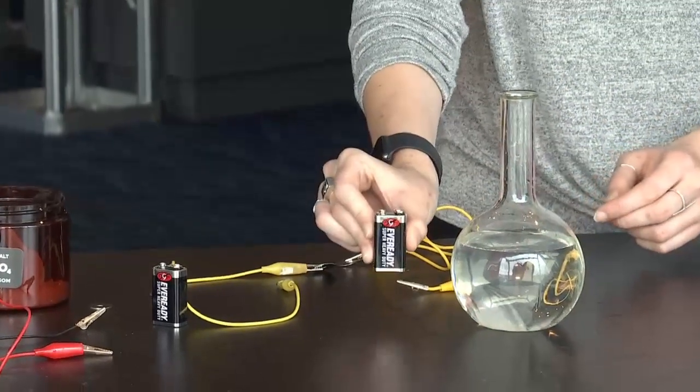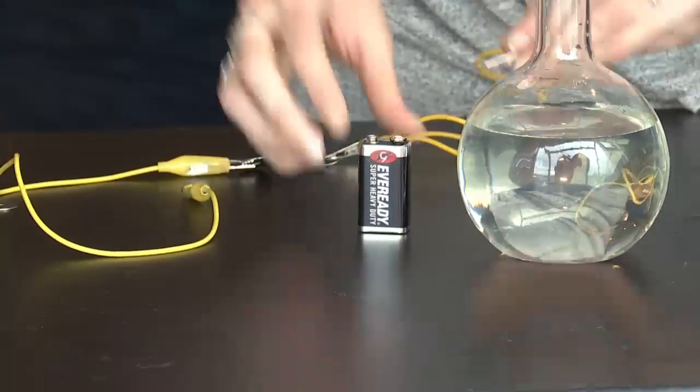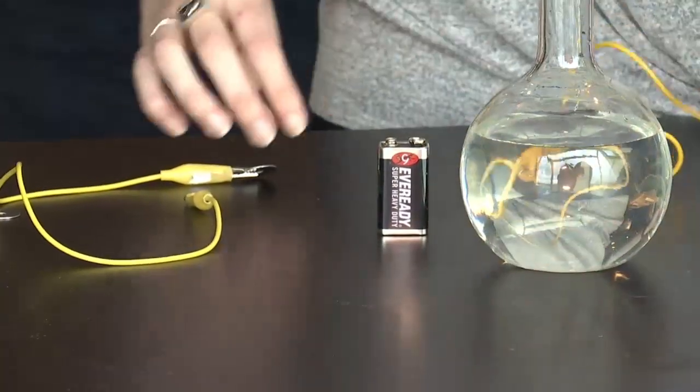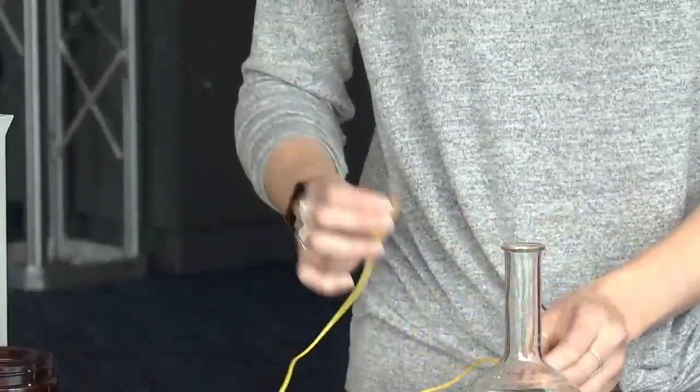So we're going to do that with a little battery here. Of course on the space station they have much more sophisticated systems, but a little nine volt will do. And then you also just need two washers and some leads here.